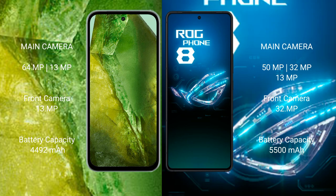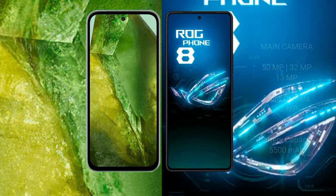The Google Pixel 8a has a 4492mAh battery with 30-watt fast charging support. The ASUS ROG Phone 8 has a 5500mAh battery with 65-watt fast charging support.